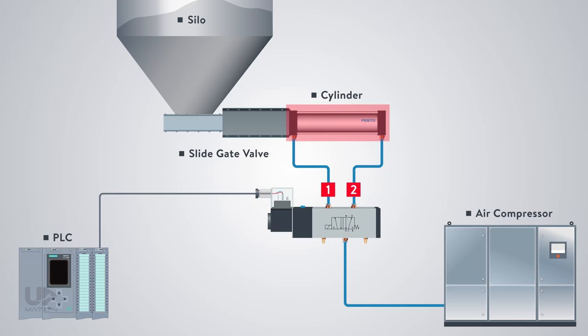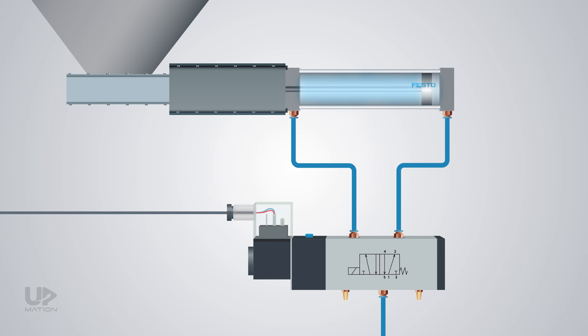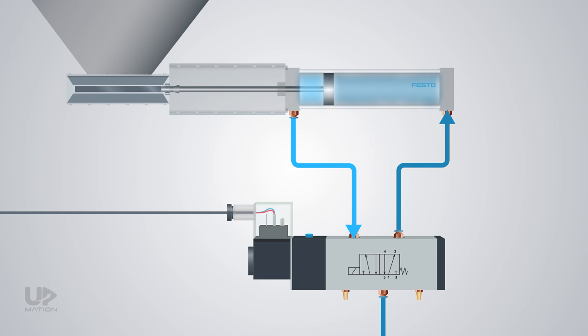A double-acting cylinder has an air chamber on each side of it to move the piston back and forth. One of the directions extends the cylinder and closes the slide gate valve to block the material coming out of the silo. And the other direction retracts the cylinder to its first position. Therefore, the slide gate valve is a normally closed valve. Meanwhile, the sound you hear is the air inside the cylinder exhausting from the valve into the atmosphere.